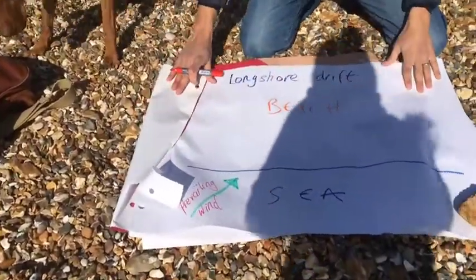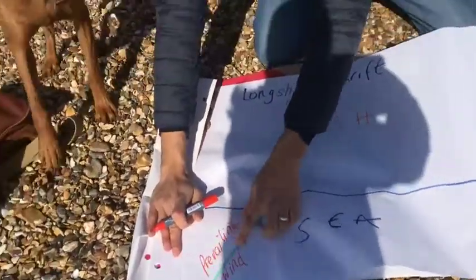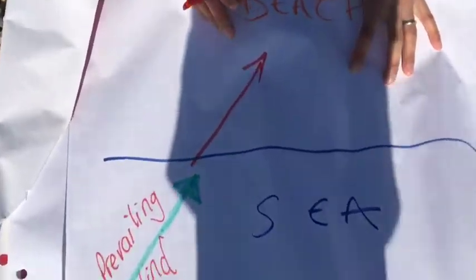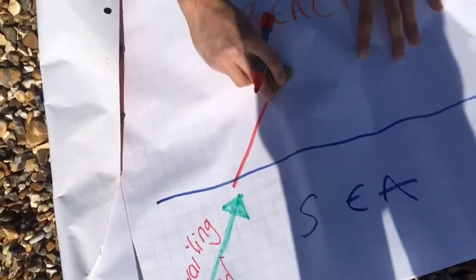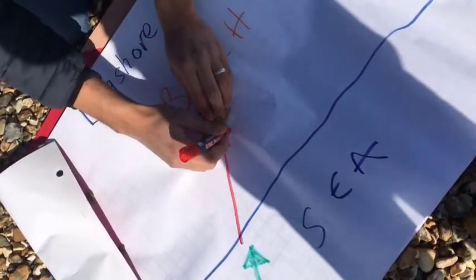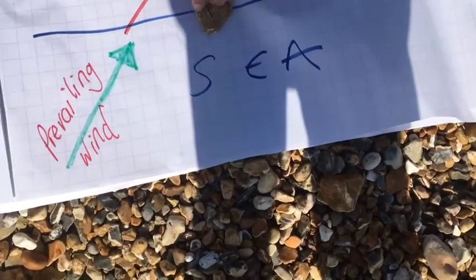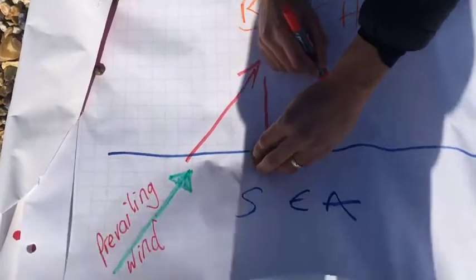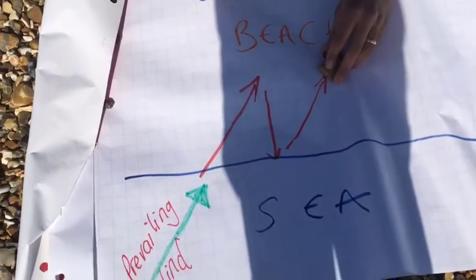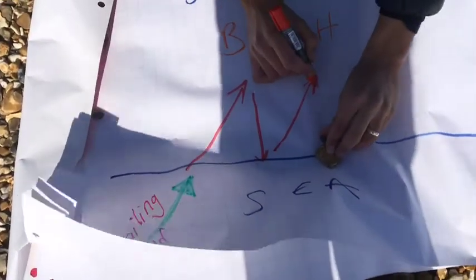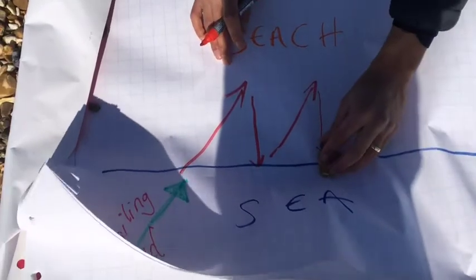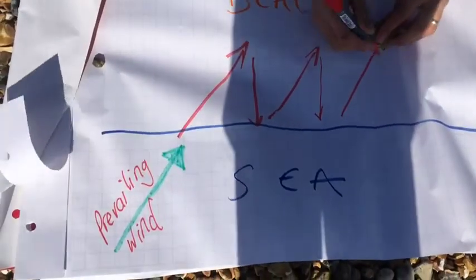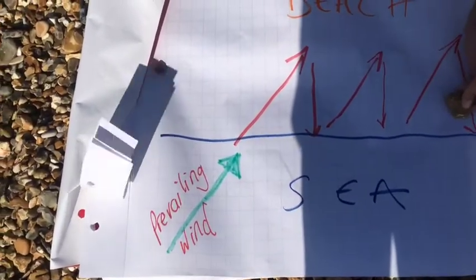Here is the diagram of longshore drift. The prevailing wind comes from this direction, meaning the swash comes up like this — material travels up the beach and gets deposited. Due to gravity, the material slides back down at a 90-degree angle; that's called backwash. The prevailing wind then pushes it back up again — that's the swash — so it travels up and falls back down in a zigzag pattern: swash up with the direction of the prevailing wind, backwash 90 degrees due to gravity.